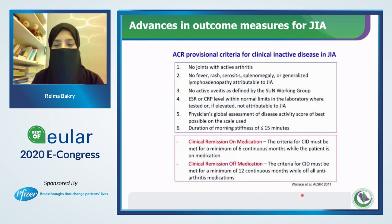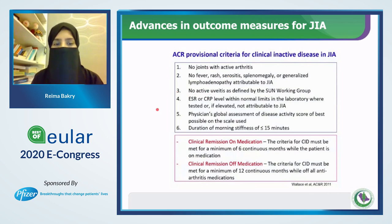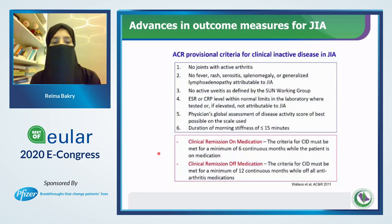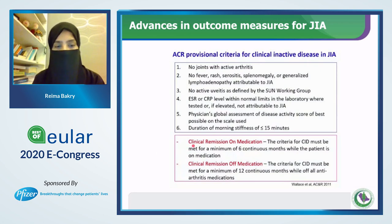The Wallace criteria for clinical inactive disease include: no joint with active arthritis, no fever or systemic manifestation, no active uveitis, normal level of inflammatory markers, physician global assessment of disease activity at best possible on scale, and duration of morning stiffness less than 15 minutes. Patients are labelled clinical remission on or off medication based on presentation over six months with or without treatment.